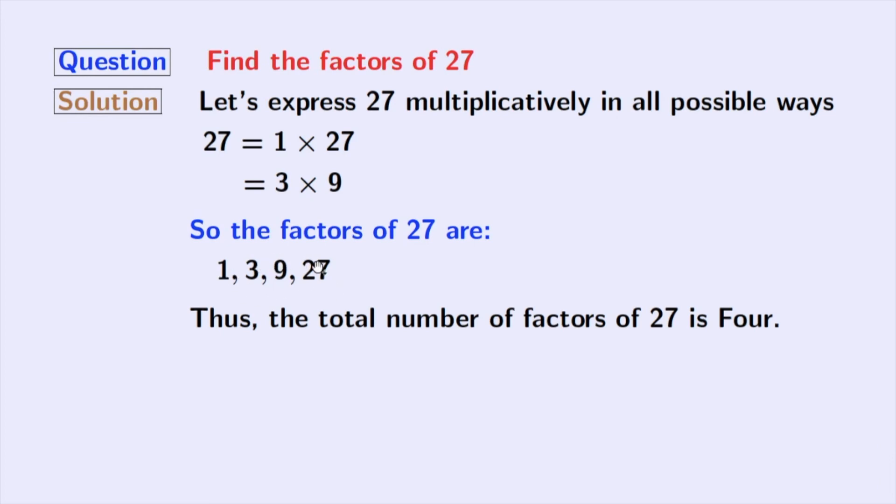Now if we look at these factors, we can see that only 3 is a prime number, because only 1 and 3 divide 3. So the prime factor of 27 is 3.